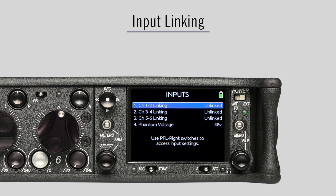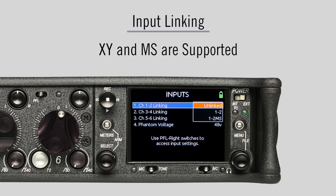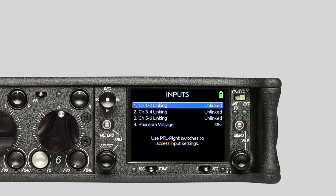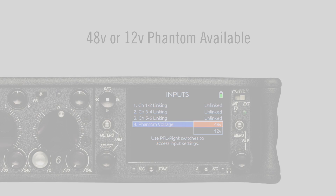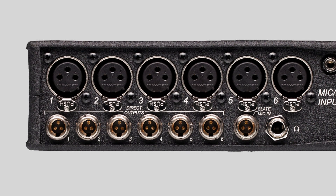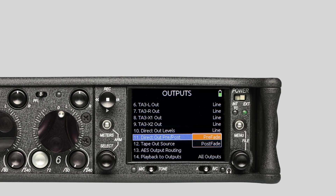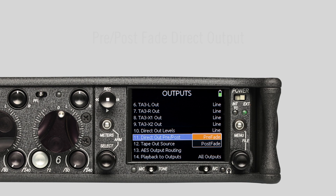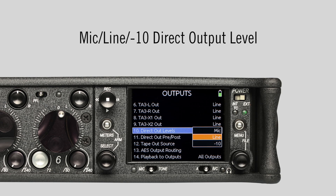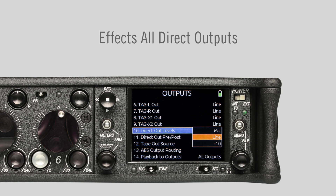Stereo pairs can be linked in the inputs option of the setup menu. Both XY and MS linking are available. From the inputs menu, 48V or 12V phantom power can be selected. Each input has direct outputs on TA3 connectors. The direct outputs can be set to output either pre or post-fade signal in the menu. Mic or line level outputs can also be selected, and this setting change affects all the direct outputs.